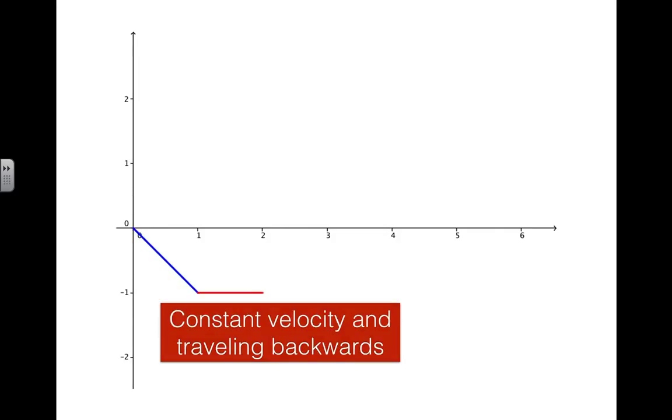Now on this range between one and two, we see that the velocity is constant but it's still traveling backwards because the velocity is still stuck at negative one.